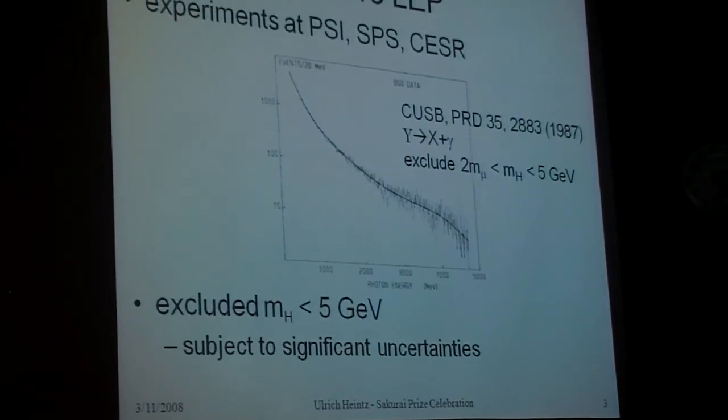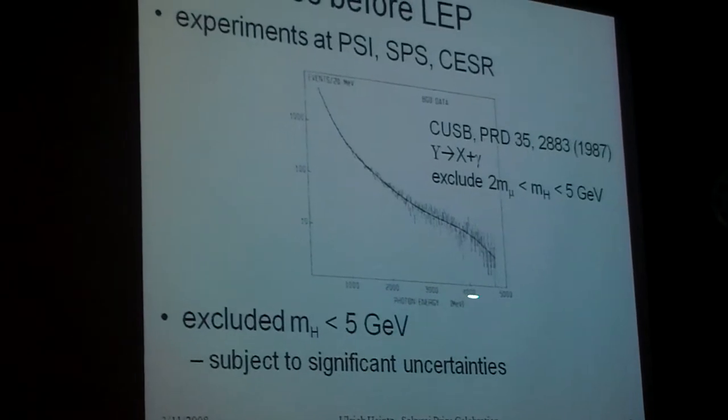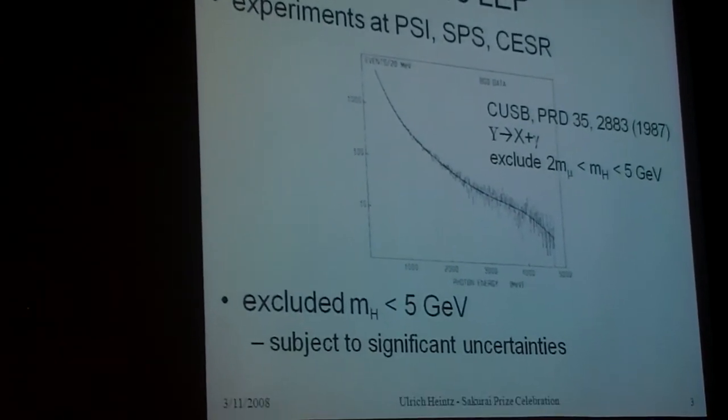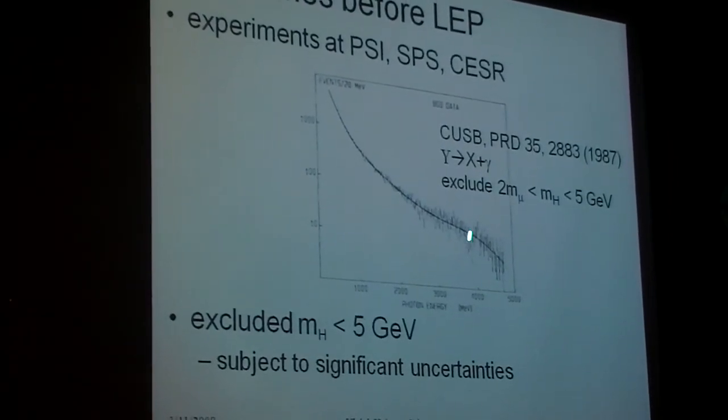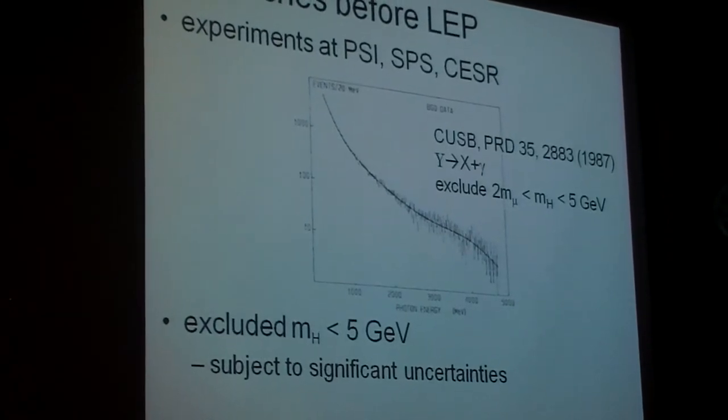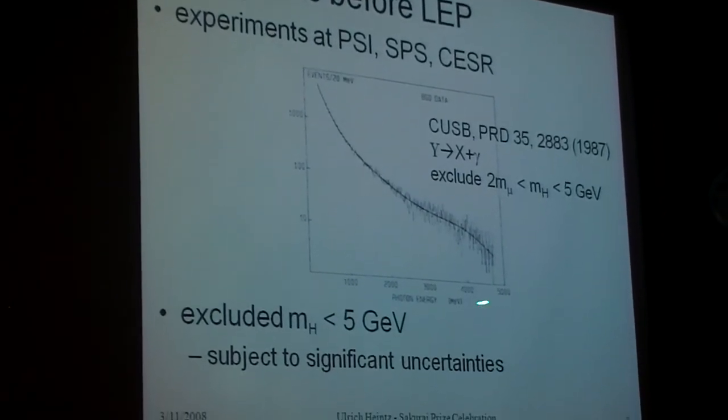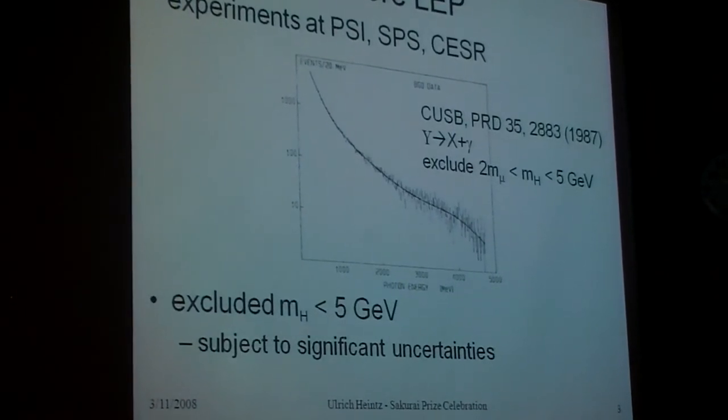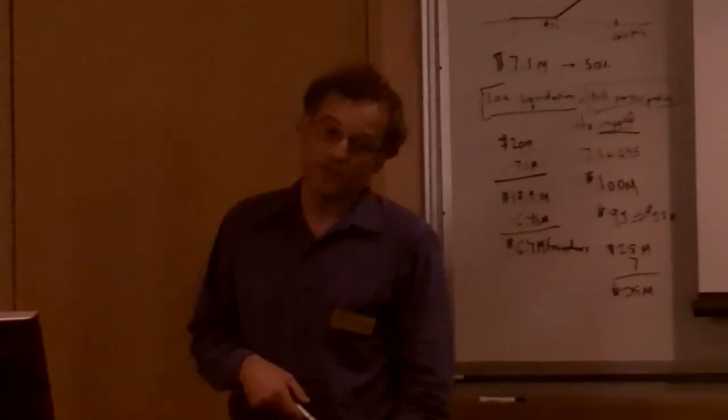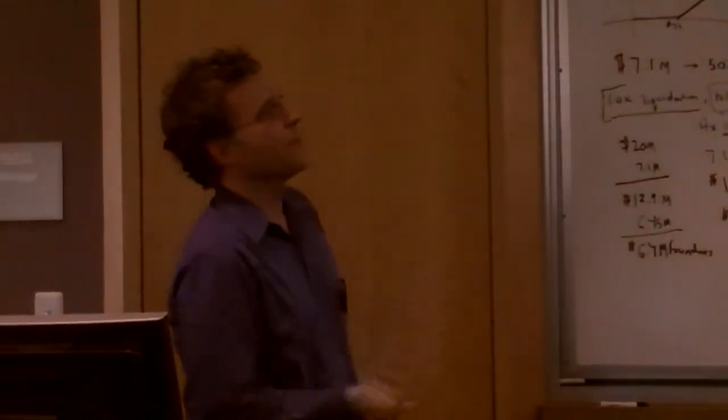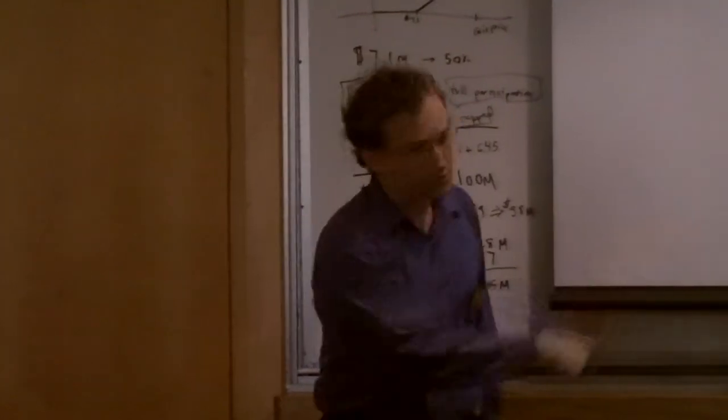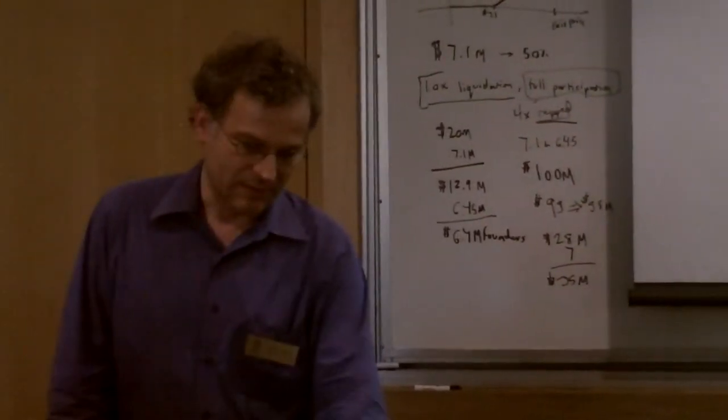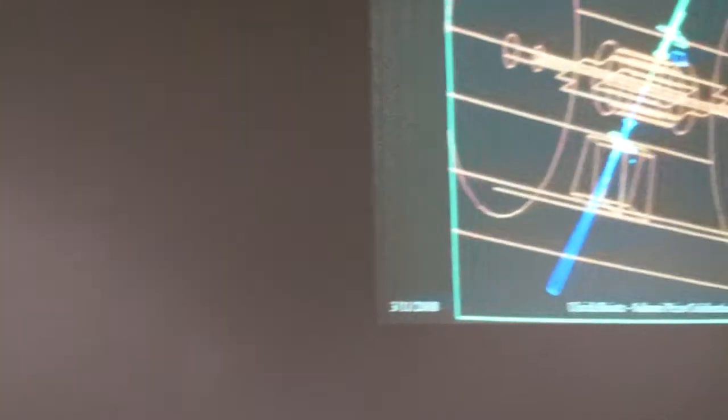It's a CUSB experiment at CESR, and what you see here is the spectrum of photons from Upsilon 1S decays. And if there is a relatively light Higgs, the Upsilon decays to Higgs plus a photon, then you would see a monochromatic line in here. That you don't see any allowed in the CUSB experiment to set a limit on the Higgs boson mass that's less than, to exclude the Higgs boson mass that's less than 5 GeV. Of course, this limit and other limits set by other experiments are subject to very significant uncertainties in calculating this branching fraction here, so that it's a rather difficult way to search for the Higgs boson mass limits on it.